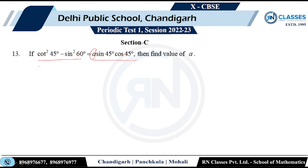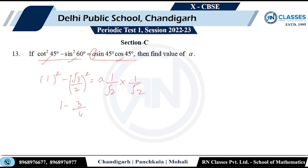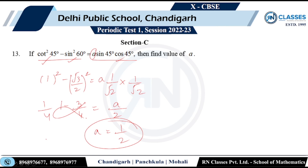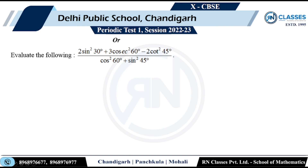Question 14: Given a trigonometric equation, find the value of k. Substituting standard angle values: cos²45° − sin²60° = k · sin 45° · cos 45°. That gives 1 − 3/4 = k · (1/√2)(1/√2), so 1/4 = k/2, meaning k = 1/2.